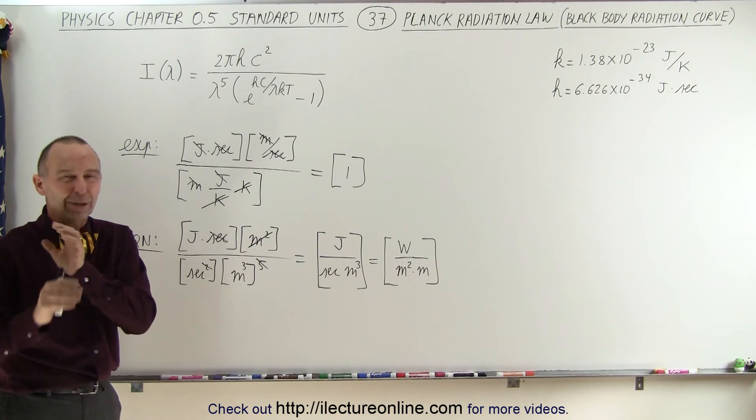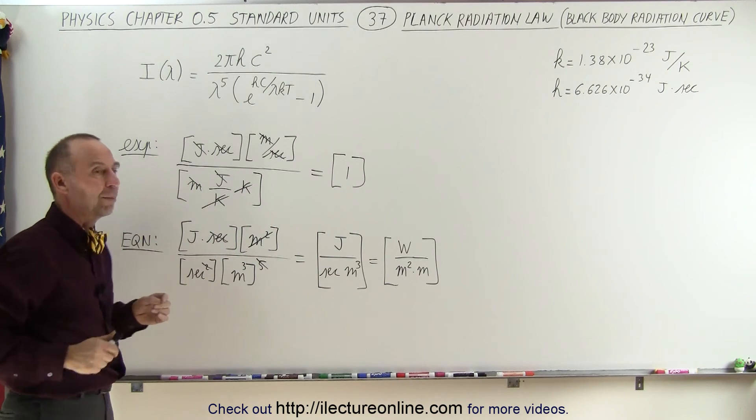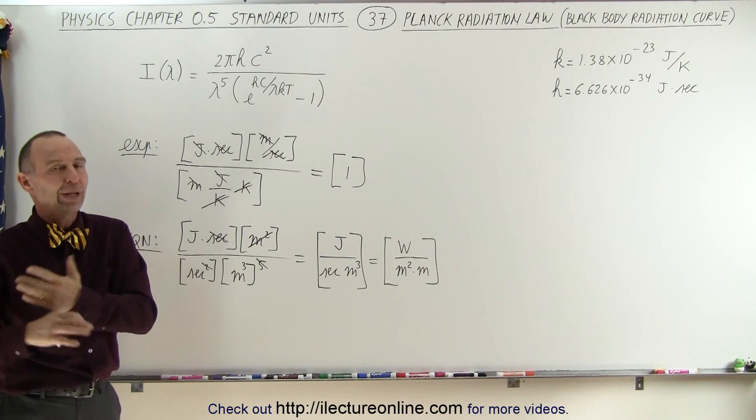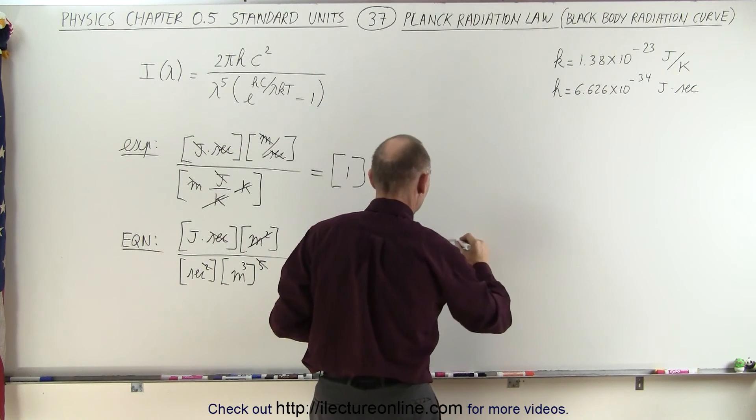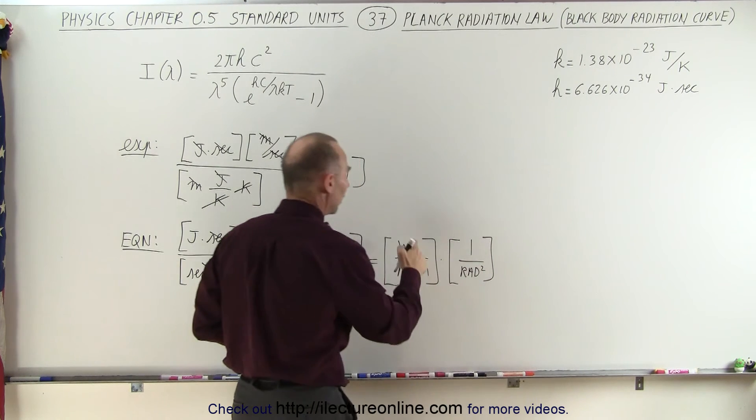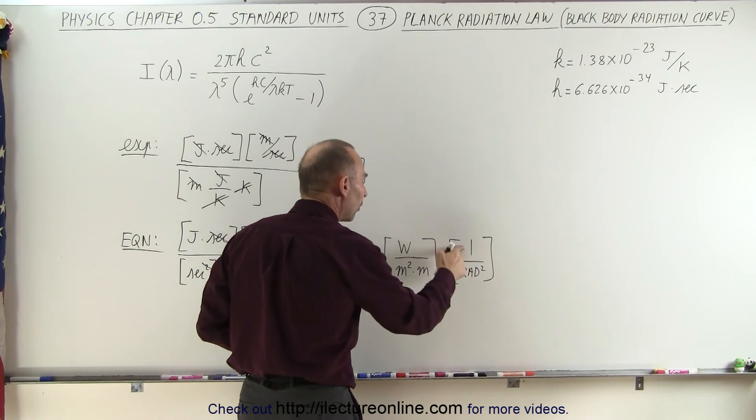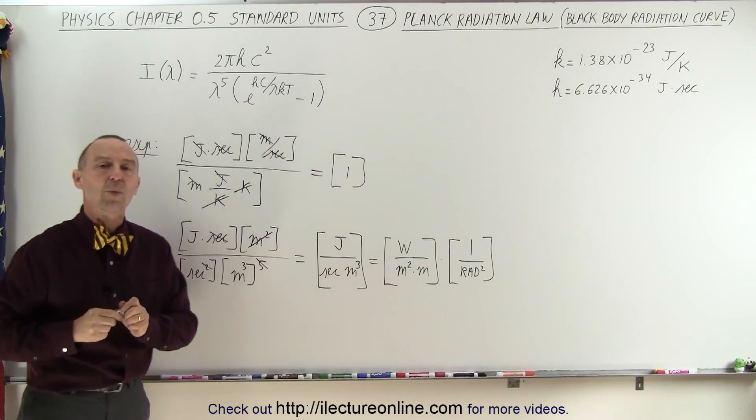There's one more unit in there, which is really a non-unit, part of the equation, which, of course, doesn't show up because it's in terms of radians. And radians have a non-unit. It turns out, we also must multiply this over 1 over radians squared, because it is intensity per wavelength per steradian, which is a radian squared.